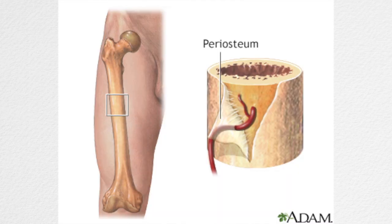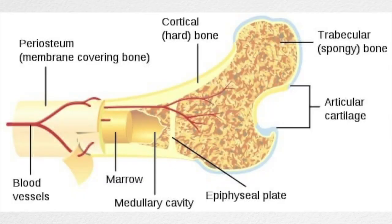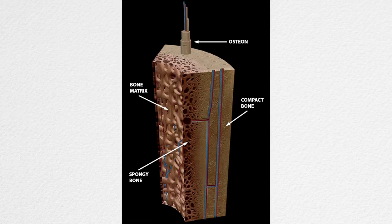Our bones have three different layers. The periosteum, which is the membrane that covers the outside of your bone; the compact or cortical bone, which is the white, smooth, but hard part of your bone; and the spongy or cancellous bone, which is the innermost softest part of your bone. It also has pores that allow marrow to be stored.